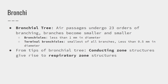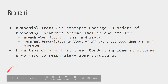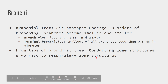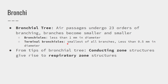We can split the respiratory system into conducting zone and respiratory zone structures. Conducting zones simply move air — starting with the nose, through the paranasal sinuses, through the pharynx, larynx, trachea, and even through the bronchial tree. All of those are conducting zone structures because they literally just move air around. The respiratory zone begins with the alveoli at the tips of the bronchial tree with the terminal bronchioles, and the respiratory zone is where gas exchange actually occurs.